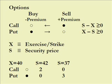A put would have no value because you could sell the security in the market for forty-two, while the put contract would allow you to do that for only forty — that's unattractive, and you can walk away from it. So the put value is zero. But if the security were to fall to thirty-seven, the call becomes worthless and the put is worth three.